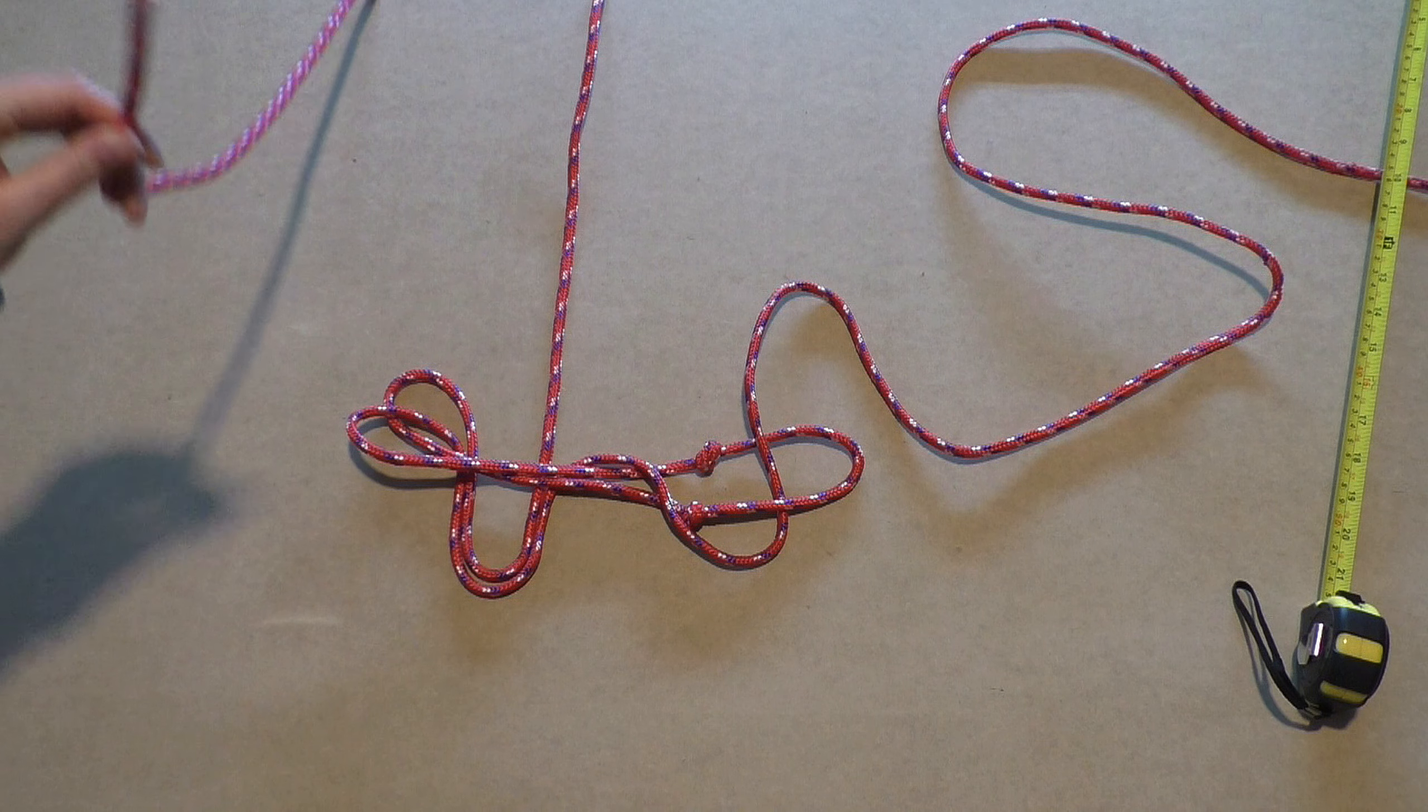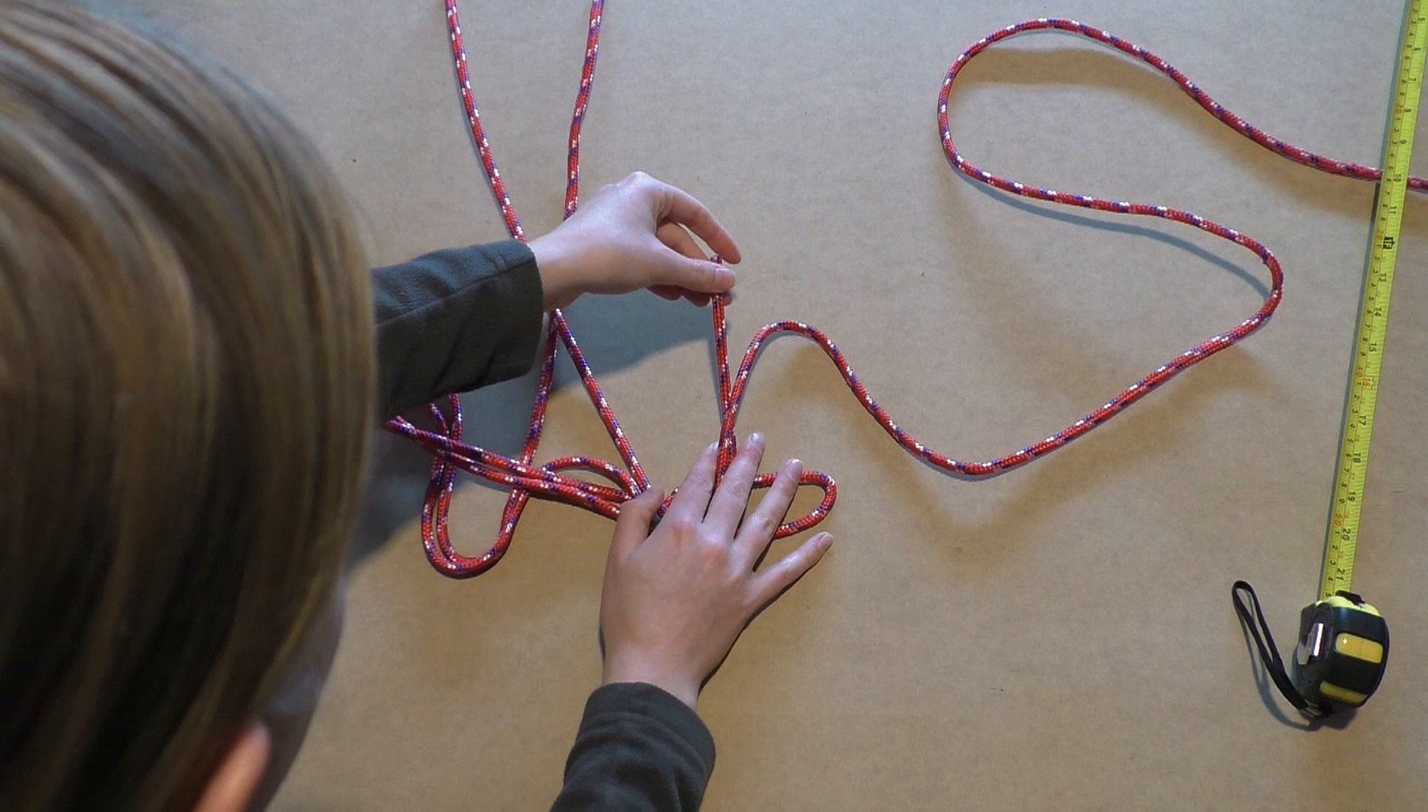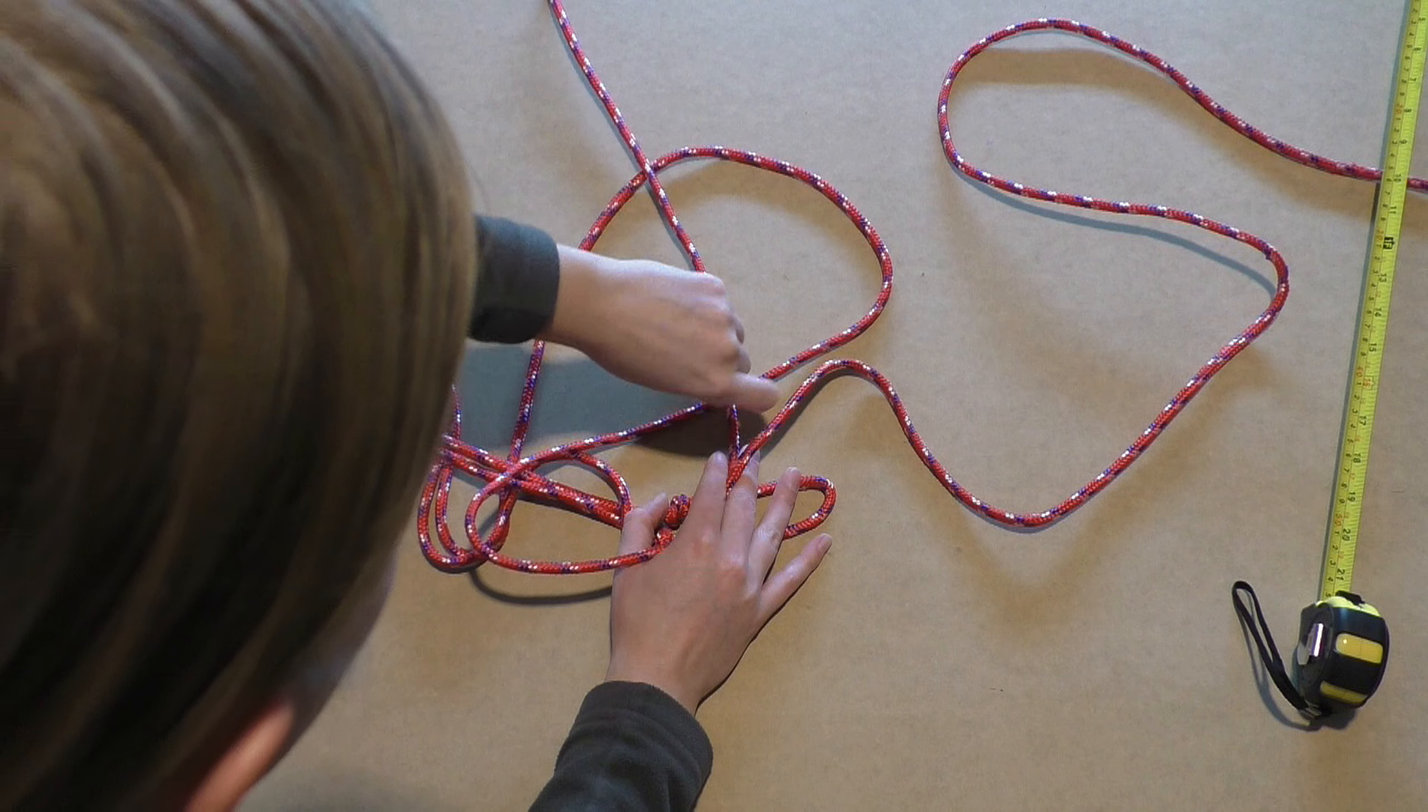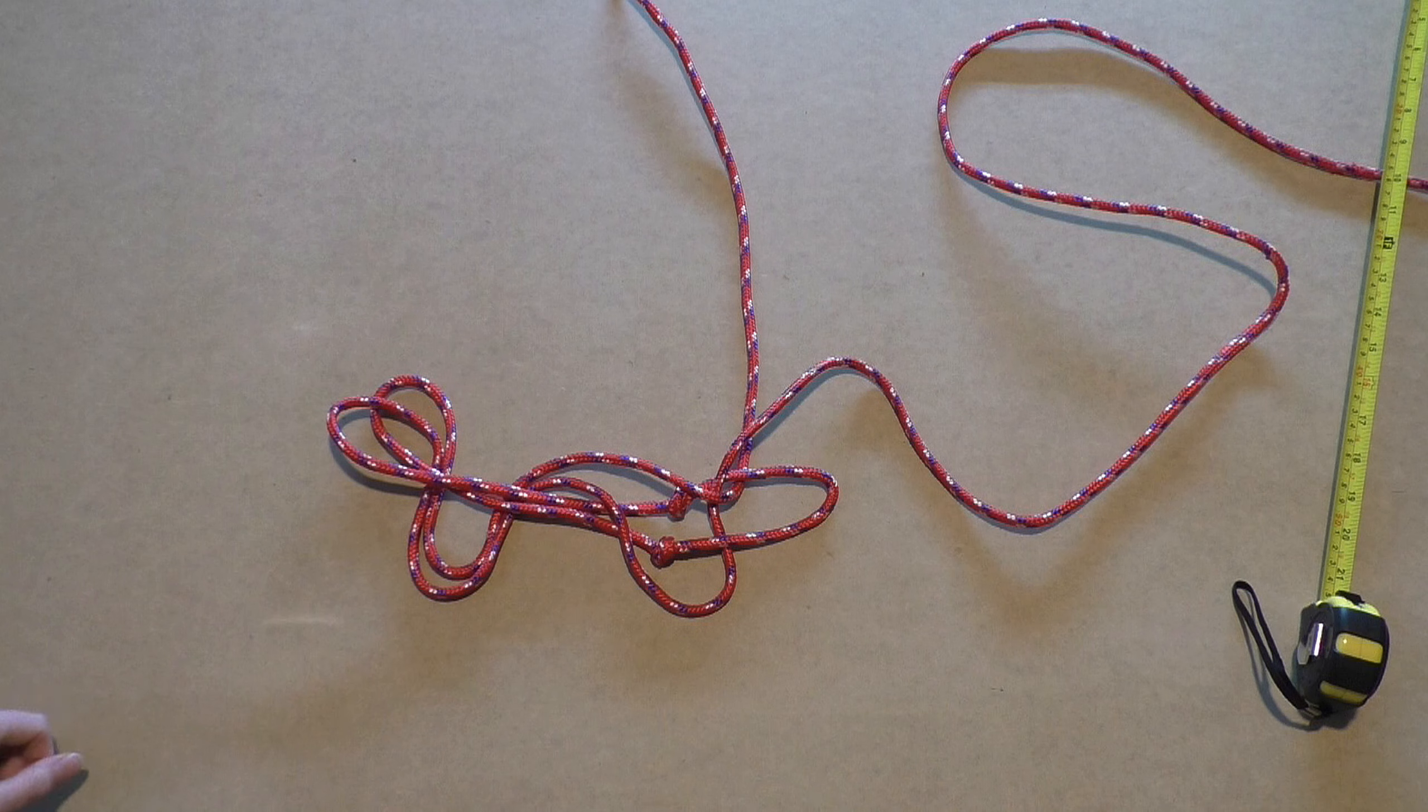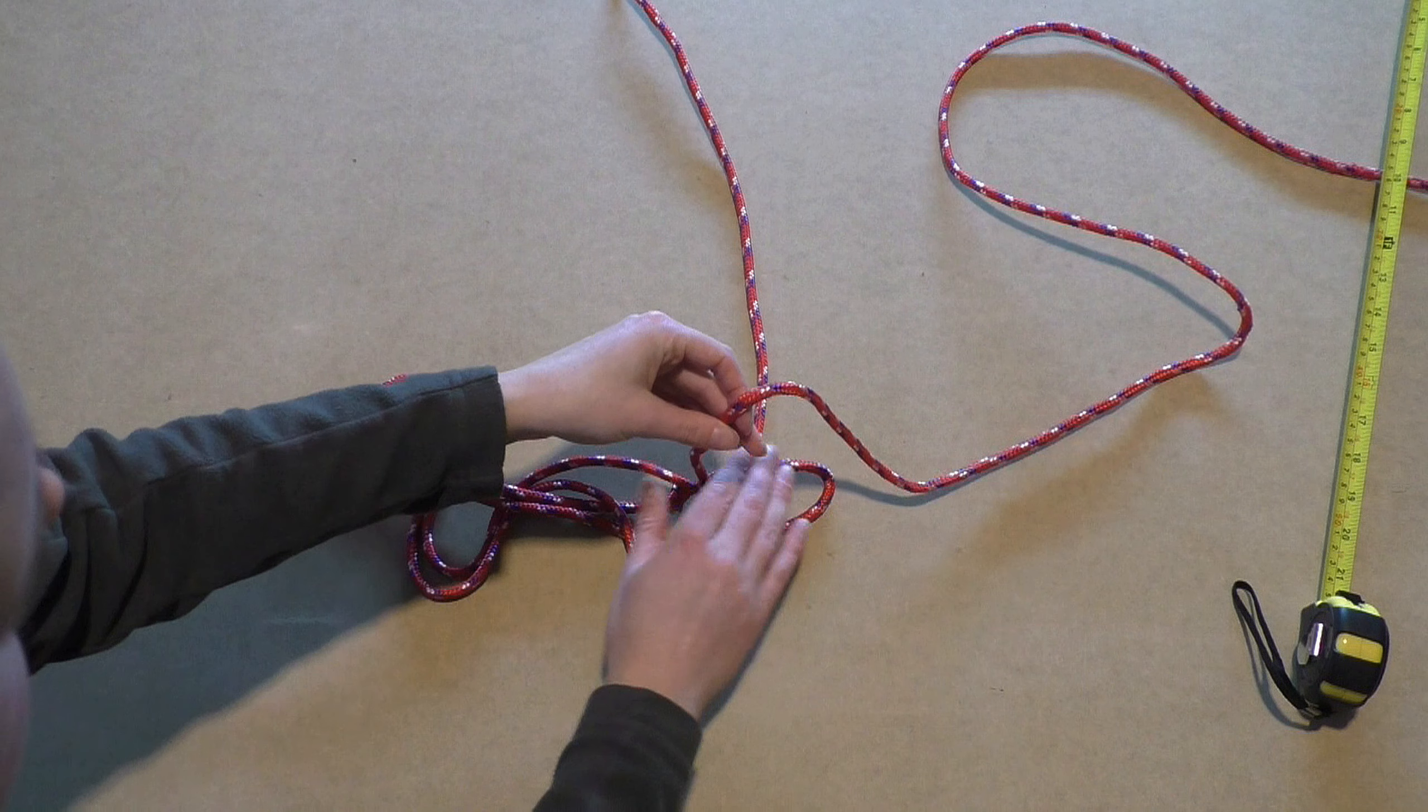Take the longer end of the rope and on the right side of where you just fed through the short rope end, feed it through the knot end loop. The shorter end of the rope will now be on the left side and the longer end of the rope will be on the right.